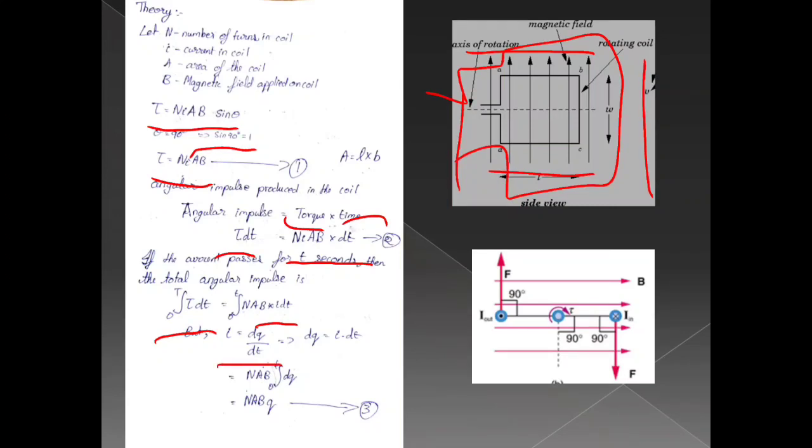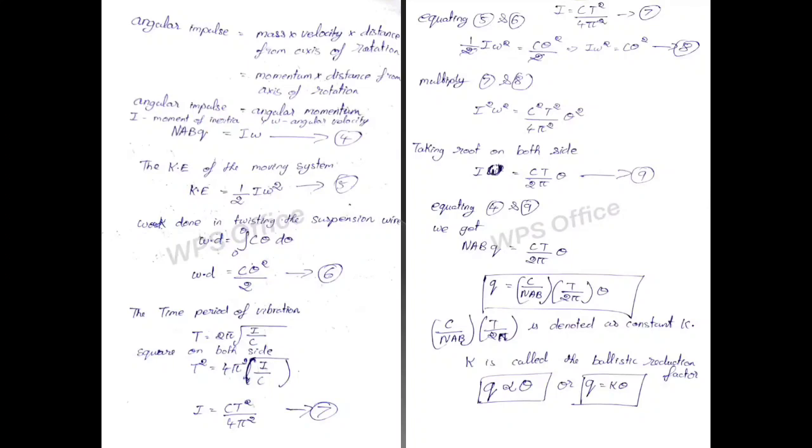We know that total angular impulse is N A B into integral I D T. The integral I D T is equal to Q. Angular impulse is mass into velocity into distance of axis of rotation, mass into velocity is momentum into distance from the axis of rotation. Angular impulse is equal to angular momentum, NABq is equal to I omega.